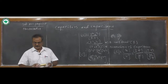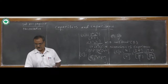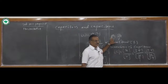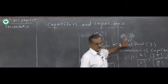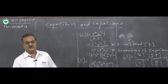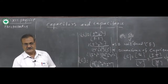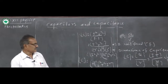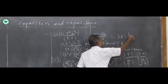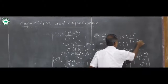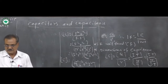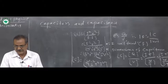Suppose a capacitor has a capacitance of 1 Farad. From this equation, capacitance is 1 Farad. Then 1 C charge gives unit potential. We can say that a capacitor has a capacitance of 1 Farad if the potential difference across it rises by 1 volt when 1 C of charge is given. That is, 1 Farad = 1 C divided by 1 volt. This is the definition of 1 Farad capacitance.